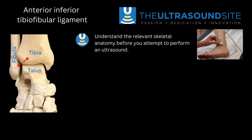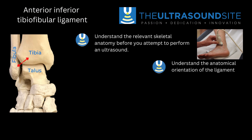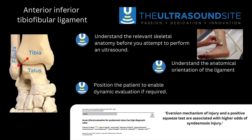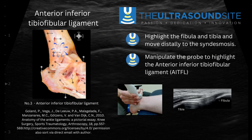The anterior inferior tibiofibular ligament requires you to understand the skeletal anatomy, otherwise orientation of the probe is extremely difficult. Understanding the appearances of the tibia and fibula and having a systematic approach is extremely important to ensure you're correctly placing your probe over the ligament, potentially prior to performing a dynamic evaluation to stress test the syndesmosis. Understanding the clinical tests around this area is also important.